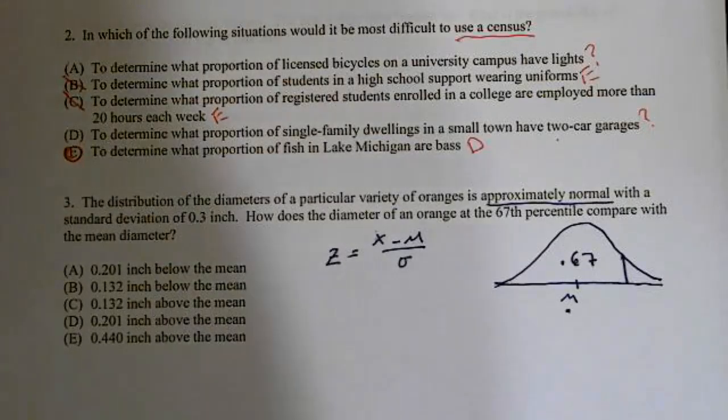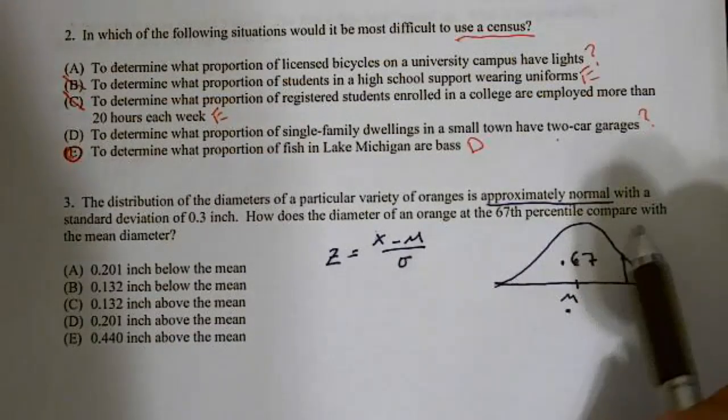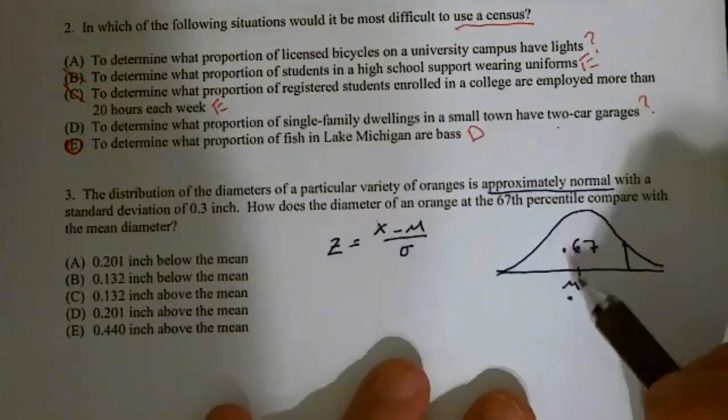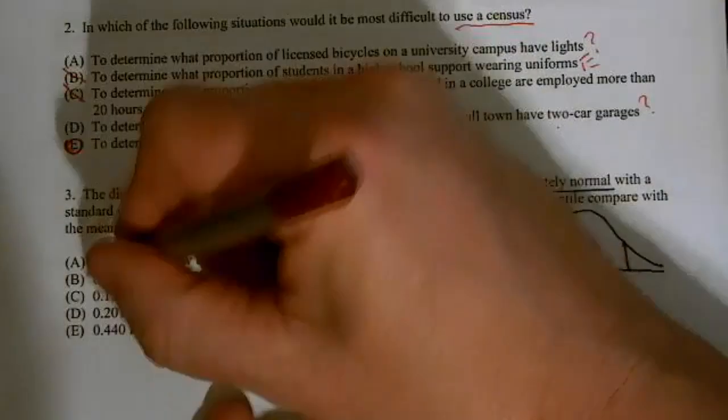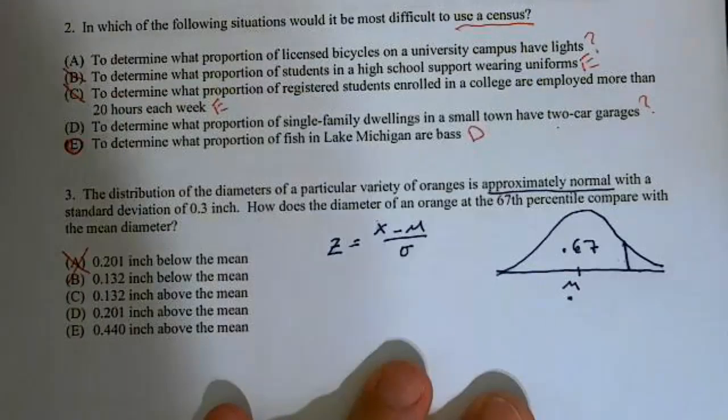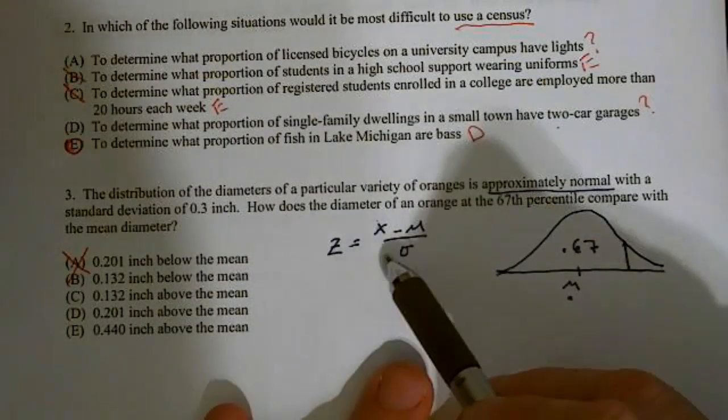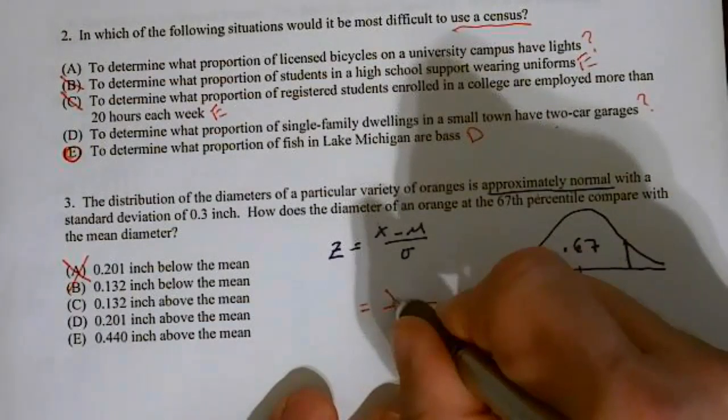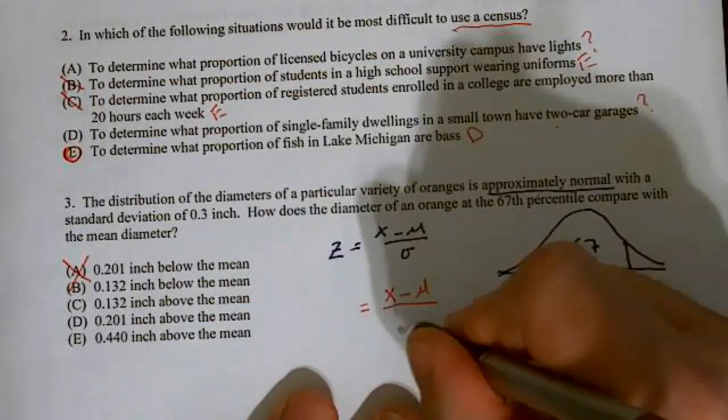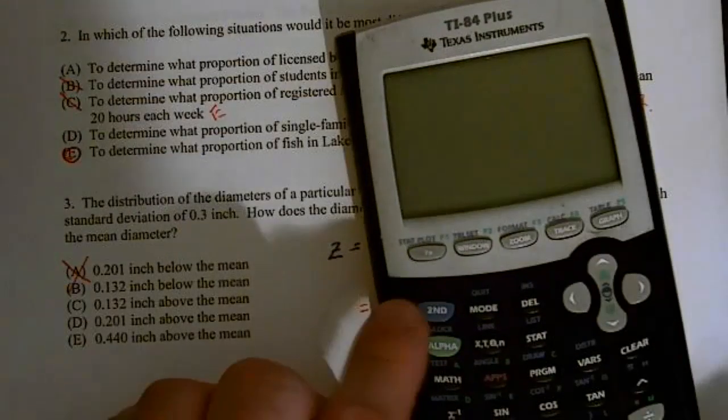The distribution of the diameters of a particular variety of orange is normally distributed with a standard deviation of 0.3. How does the diameter of an orange at the 67th percentile compare with the mean diameter? Well, I know that if it's the 67th percentile, halfway is 50, so 67 is going to be above. So that right there tells me I'm getting rid of A and B because both of those are below. I don't have everything I need to know, so I write down z equals x minus mu, because they told me it was normally distributed. I don't know x, I don't know mu, I know the standard deviation is 0.3. Because they give me a percentile, I can go to inverse norm and get a z-score.